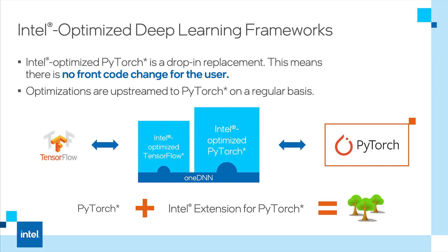One of the ways in which Intel extension for PyTorch helps you optimize your models is by offering automatic mixing of different precision data types used to improve inference performance.